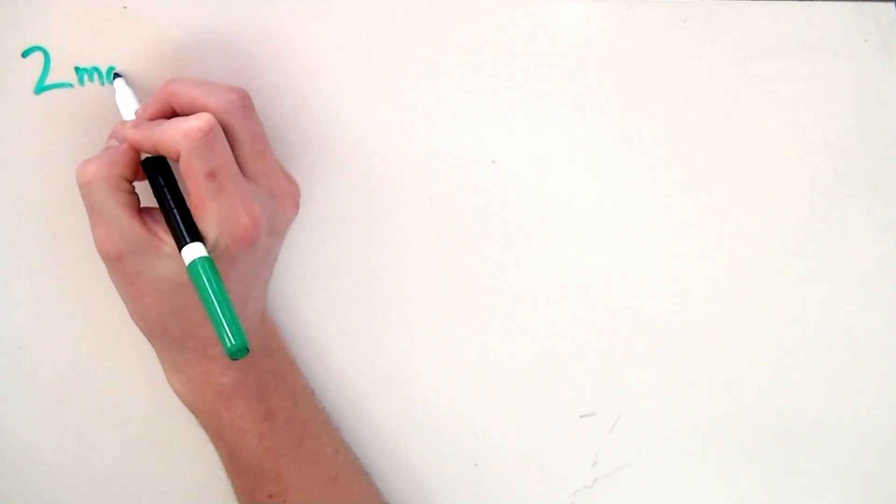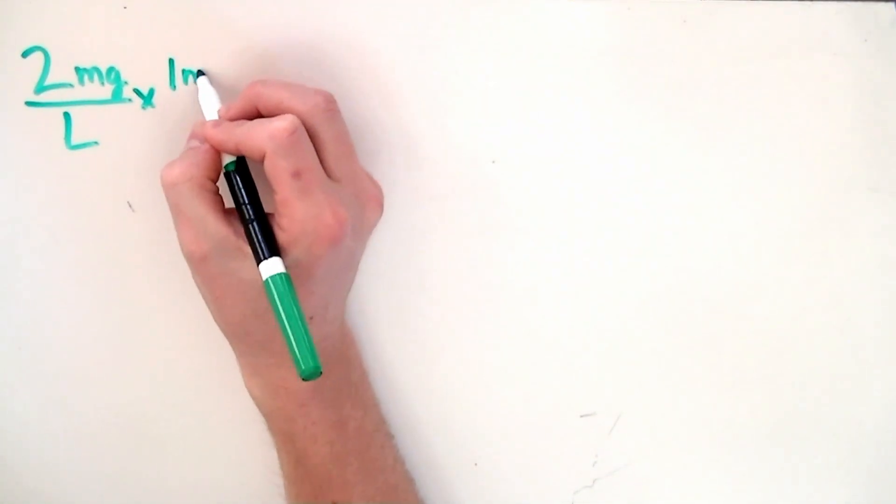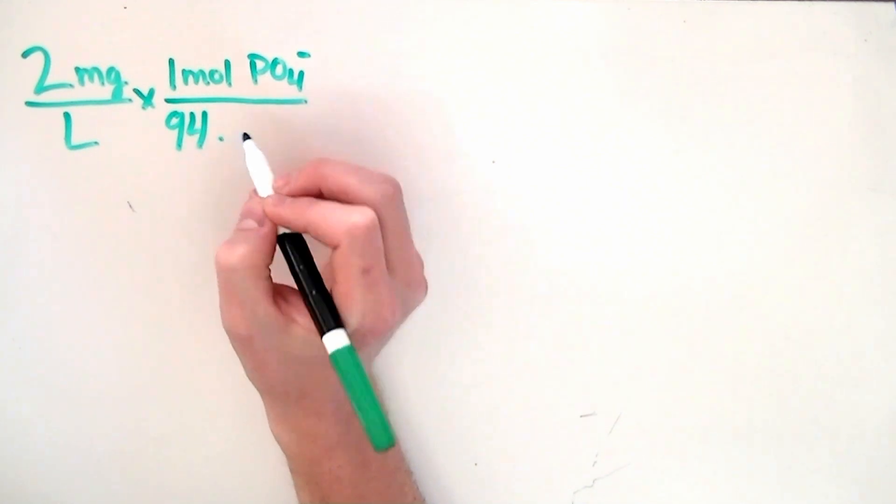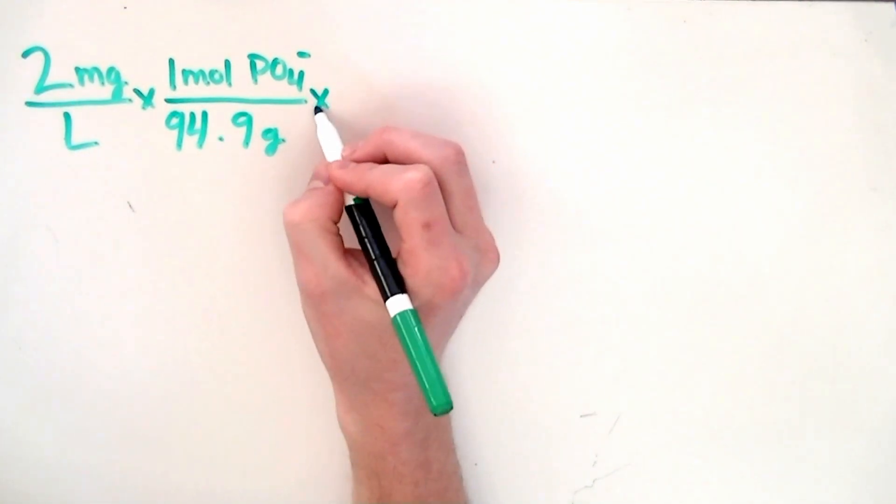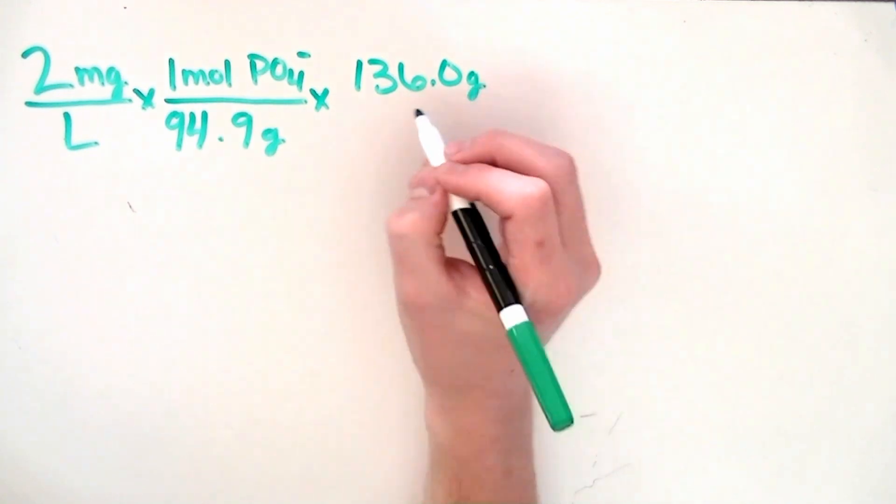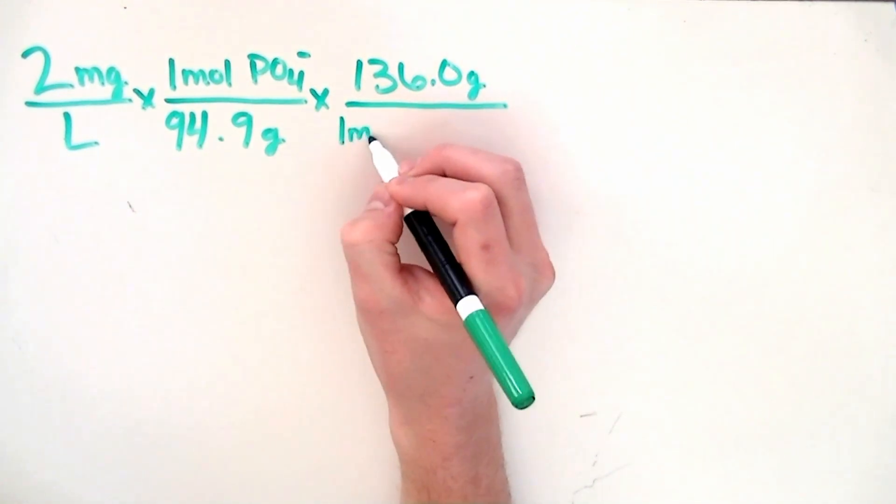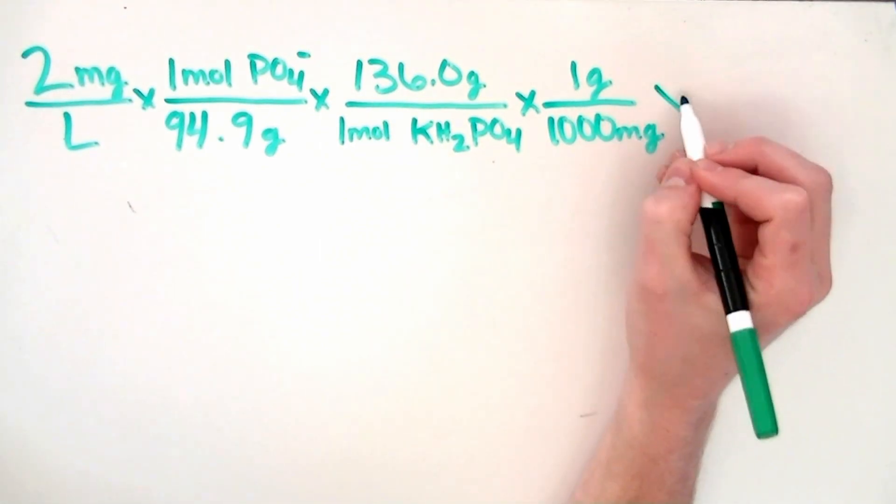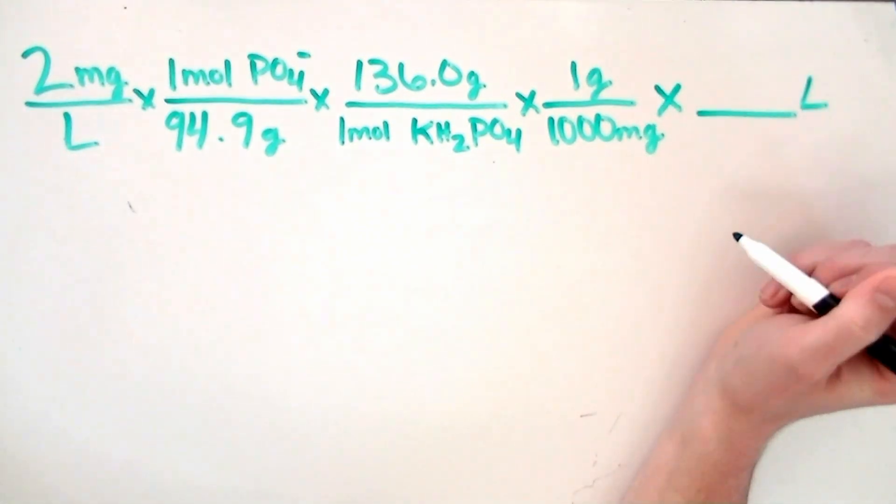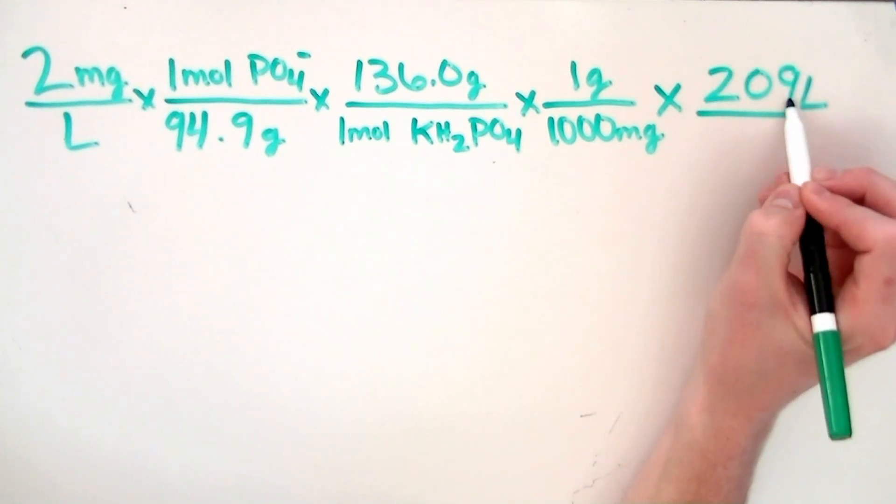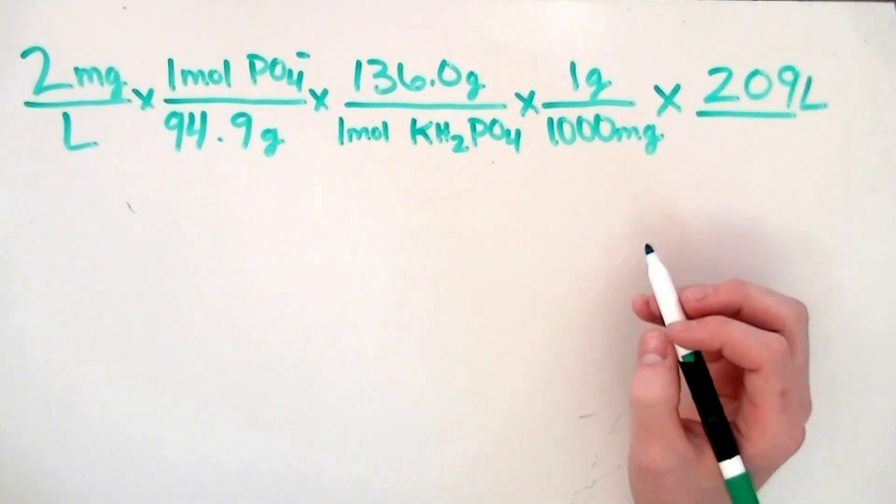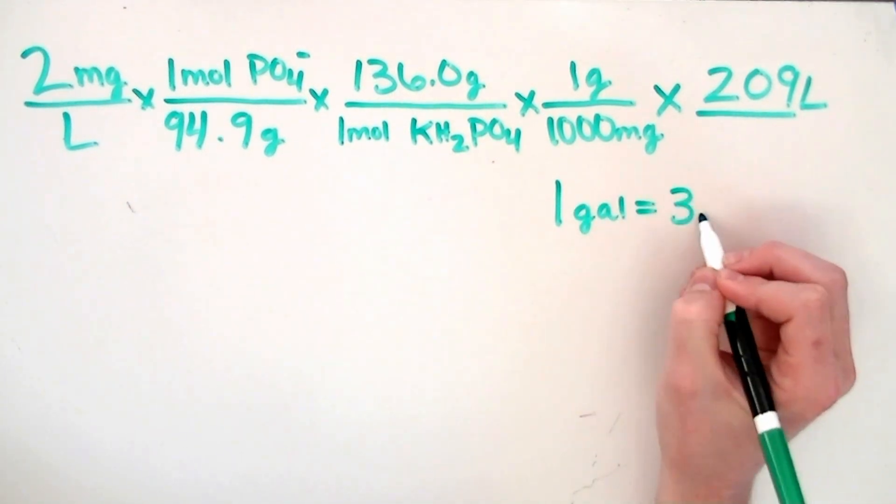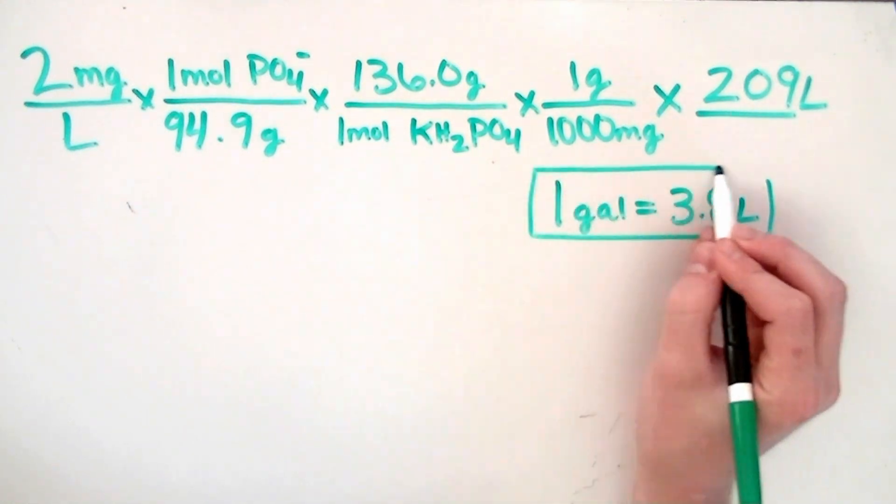We start by writing down our desired concentration of phosphate, being 2 milligrams per liter. We then divide by 94.9 grams, which is the molecular weight of phosphate. Next, we multiply by 136 grams, which is the molecular weight of our fertilizer, potassium dihydrogen phosphate. It's at this point we want to get out of milligrams and into grams, so we divide by 1,000 milligrams. The last step in this calculation involves multiplying by the amount of liters your aquarium is. Now, we're using a 55-gallon aquarium, which is equal to 209 liters. Don't forget that 1 gallon equals 3.8 liters, so you can put your own number here.